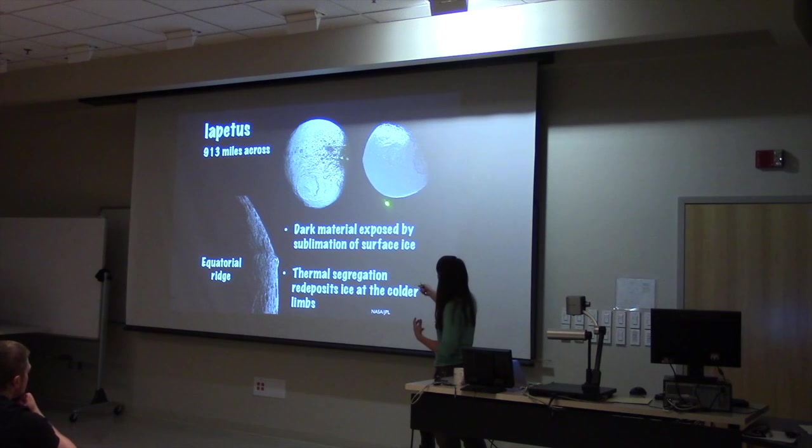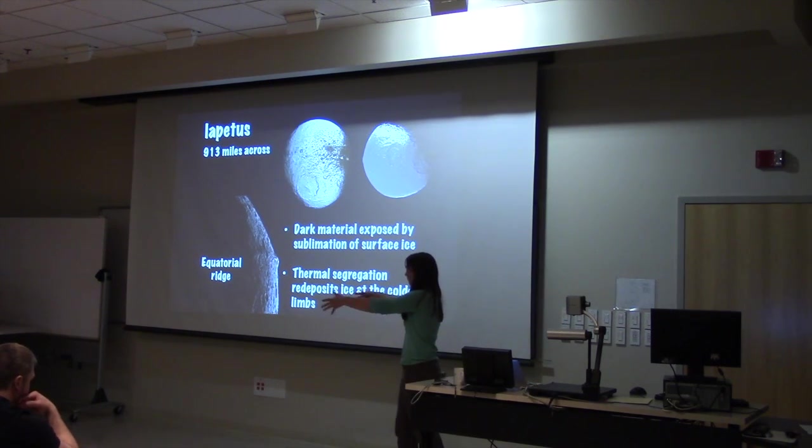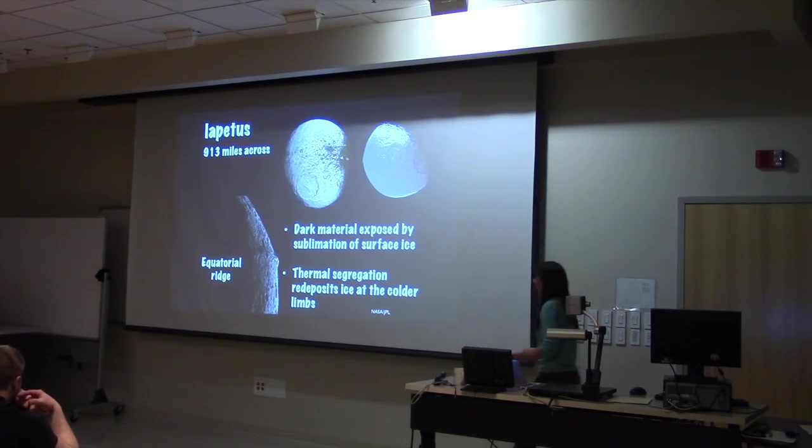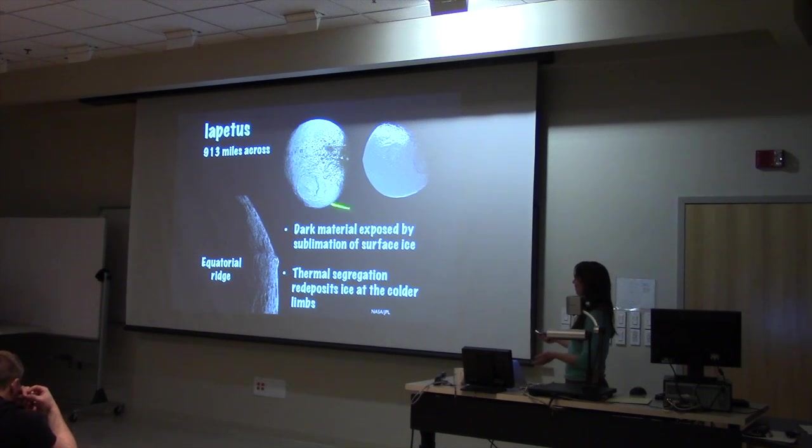And as volatile material sublimates off the surface, so think about bright material leaving the surface because it's hot, that moves away from the surface on the dark side, goes over to the cold side, resettles back onto the surface. And this is kind of a self-fulfilling process where, as it continues to happen, this side just gets darker and darker, this side just gets brighter and brighter.